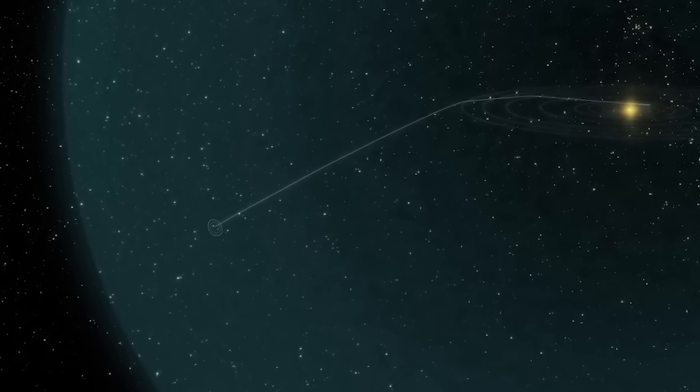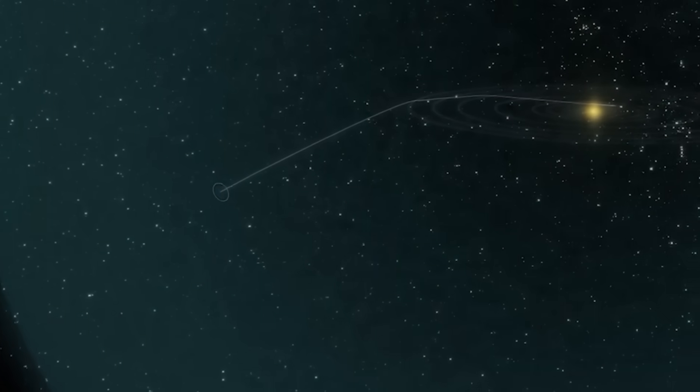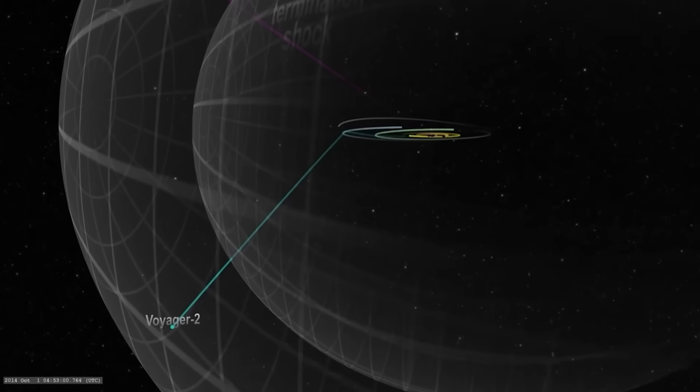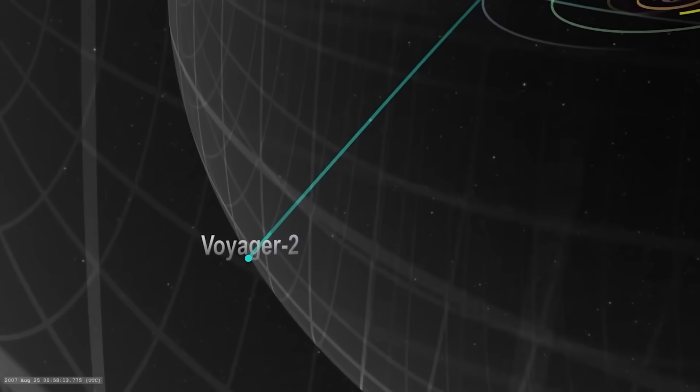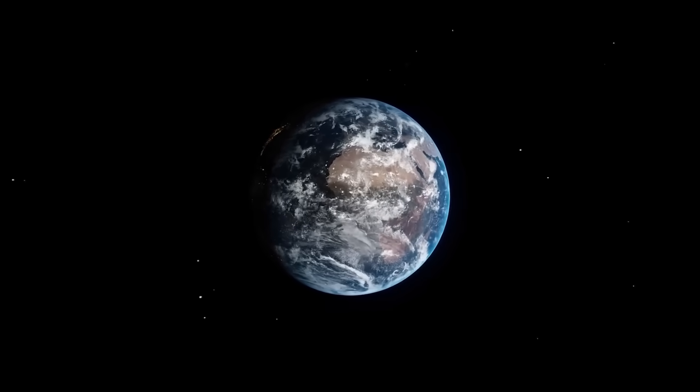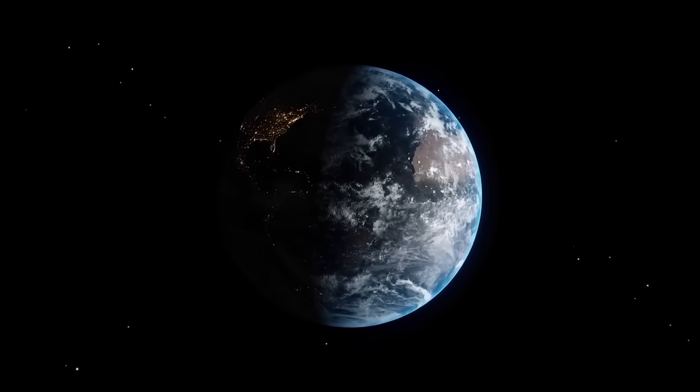The implication is disturbing. Earth's protection isn't permanent. It fluctuates. It can fail. And Voyager 2's sharp transition into the galactic medium revealed just how thin that veil truly is. The cosmos beyond isn't empty. It's violent, unpredictable, and much closer than we imagined.